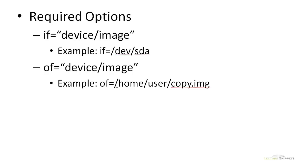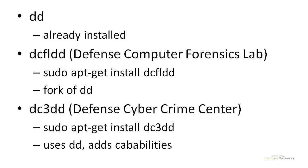You also need the output — where the data will be going once it's being copied or duplicated. For example, the output could go to the home folder, the user folder, and then to an image file called copy.img. That will create a raw image that can be used for computer forensic analysis. All three of those commands are very useful, and you will see them used in data acquisition operations while using a Linux-based operating system.